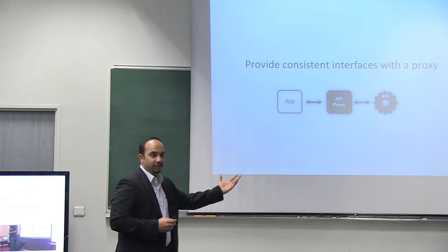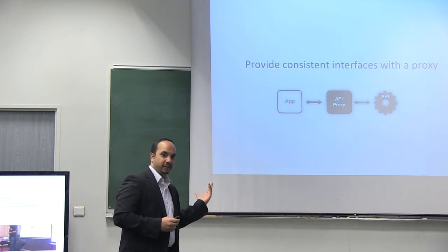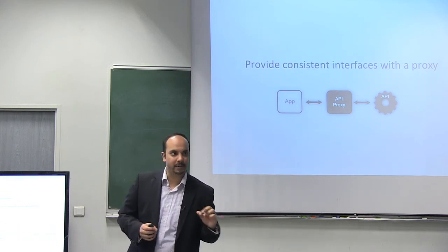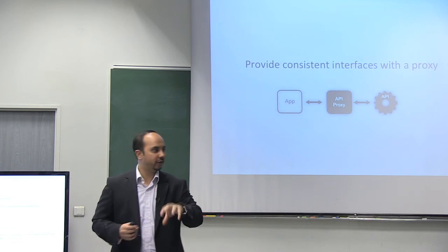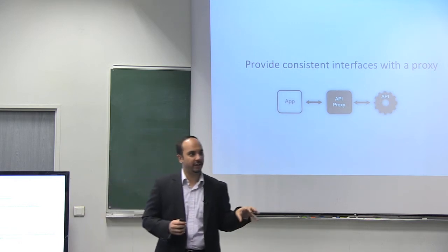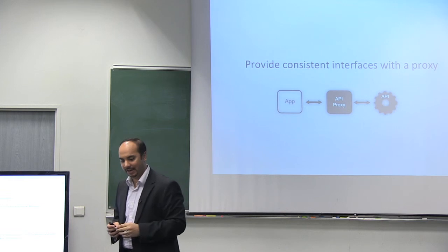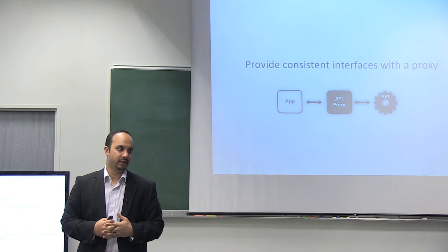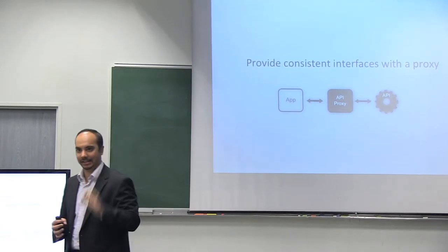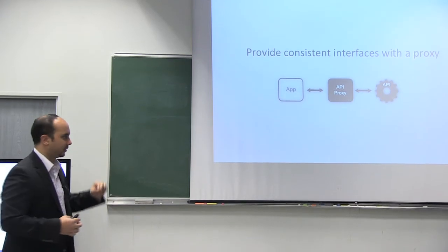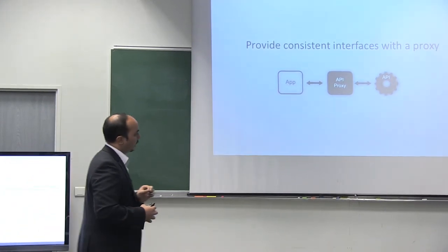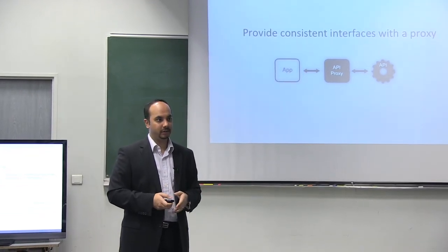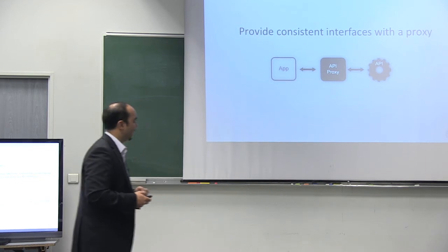We've also learned that if you offload parts of your interface, you can gain a better level of consistency. If you're going to deploy more than one API in your organization, or if you have pockets of teams in a federated environment where different people develop different APIs, you don't want to provide all those different interfaces to developers. You need consistent interfaces to stay simple and familiar. API proxies and API gateways can help with that. This idea of abstraction is useful and effective.